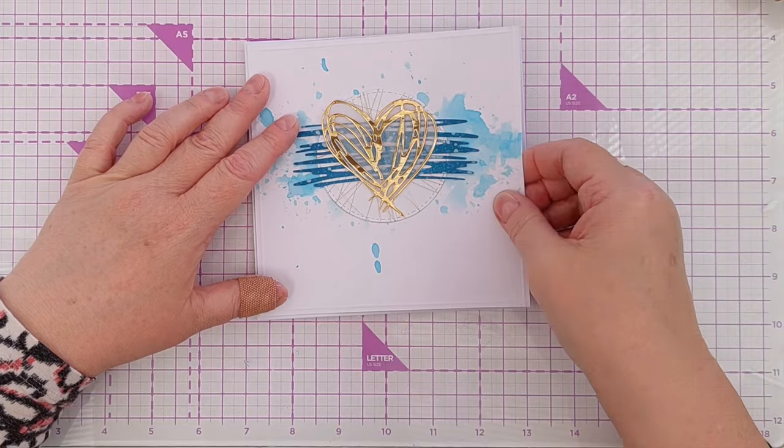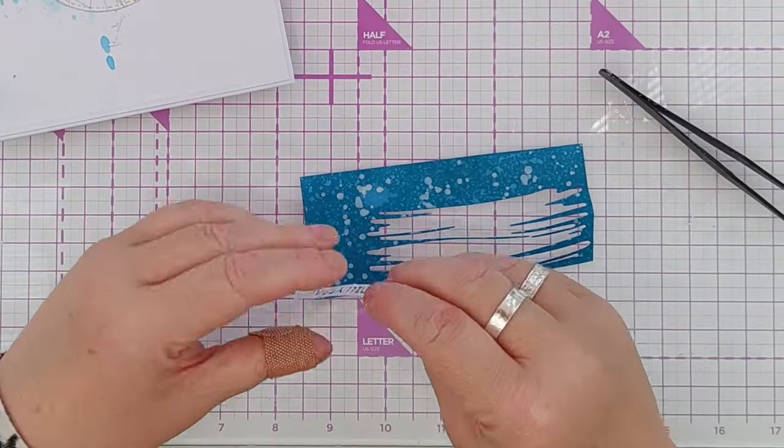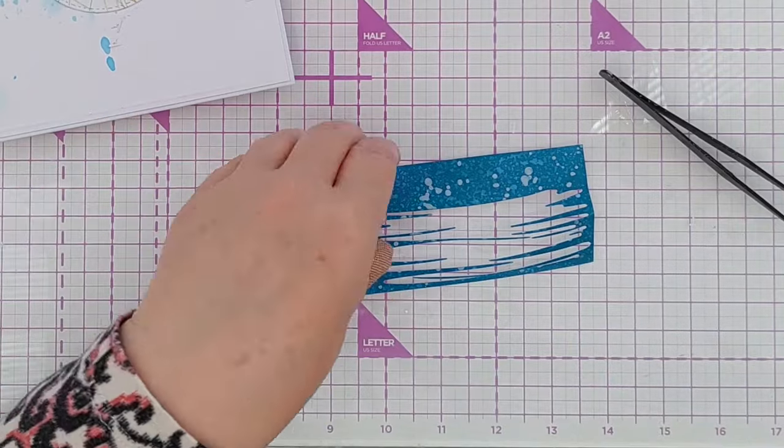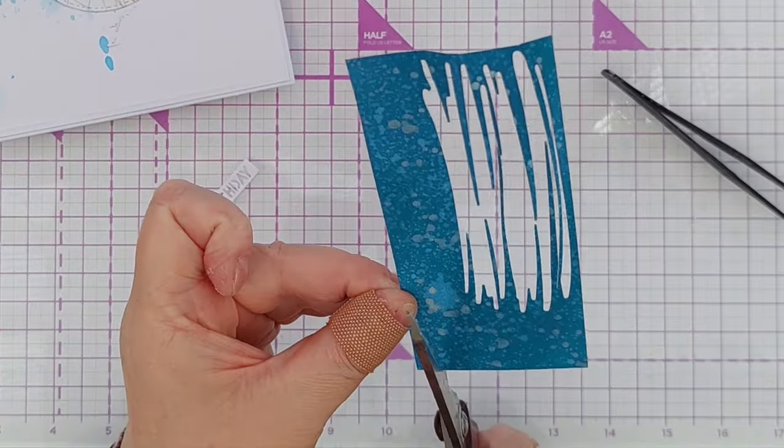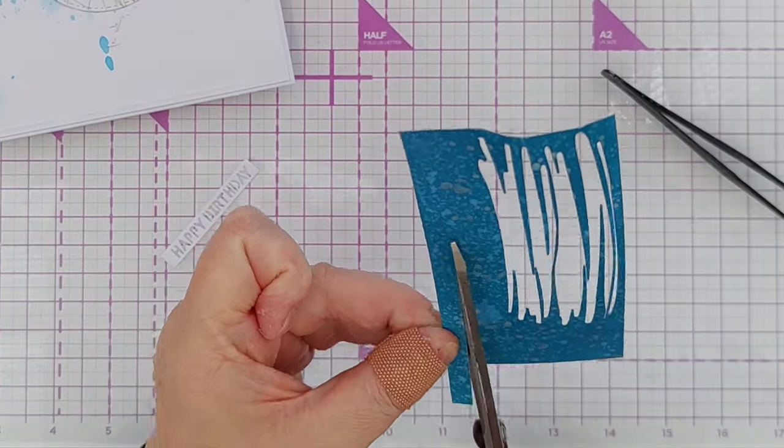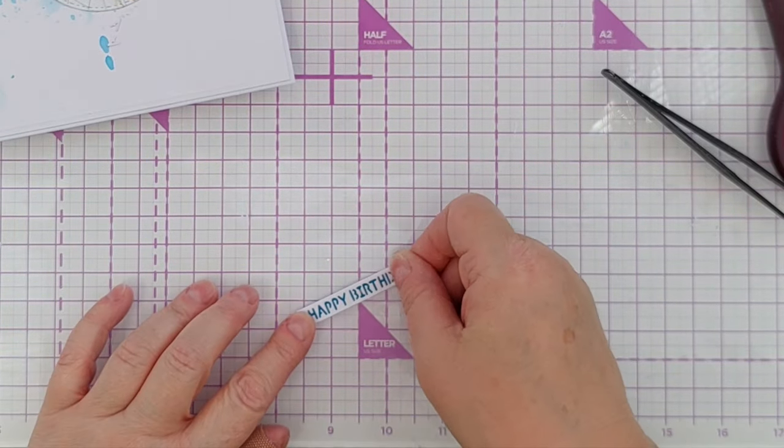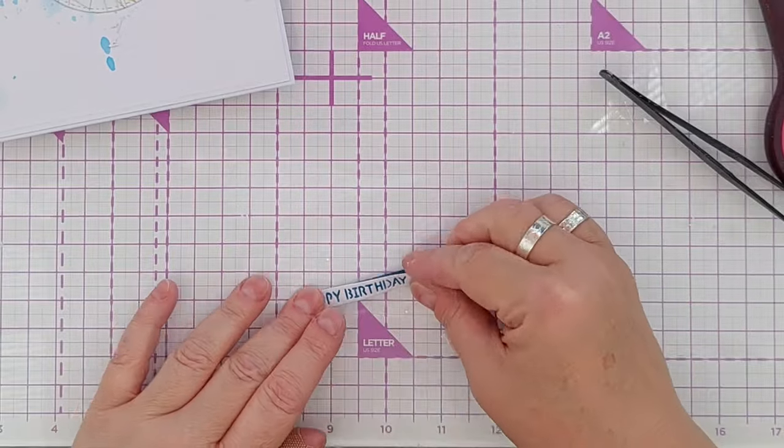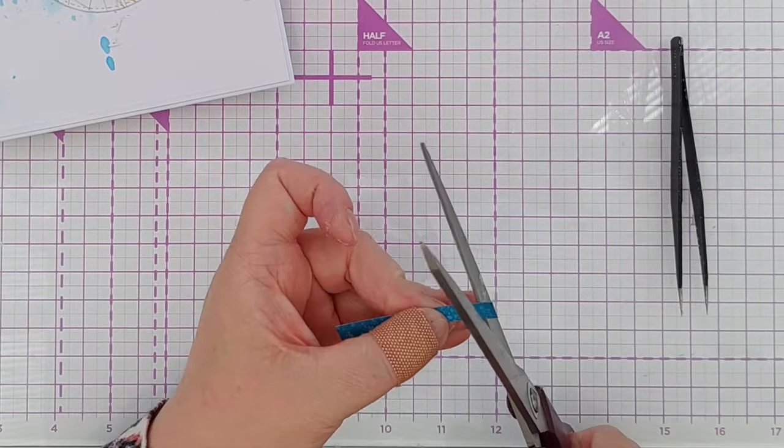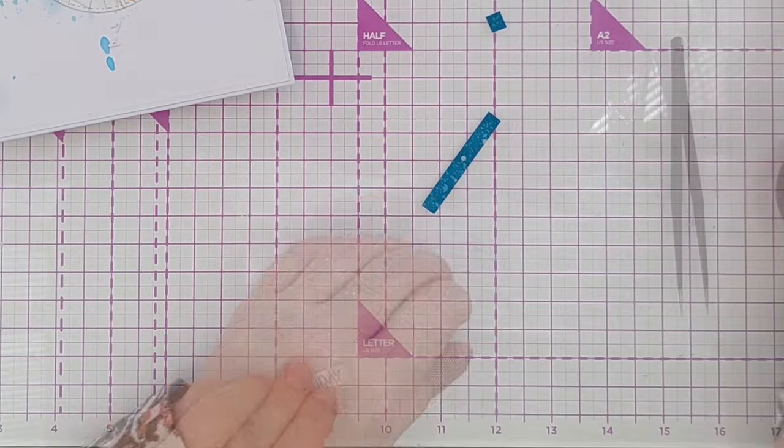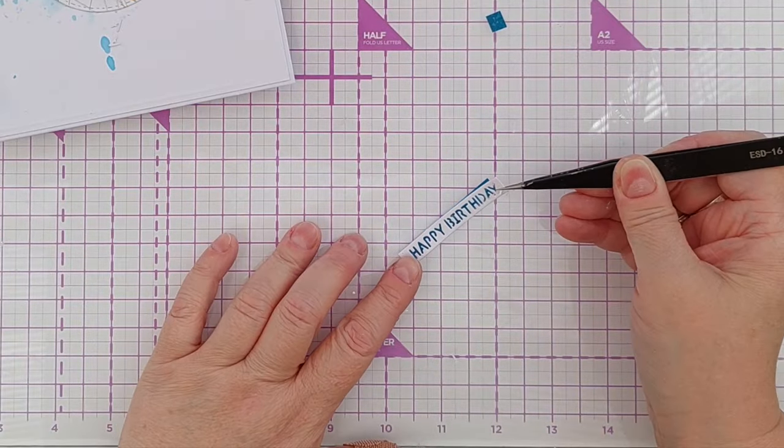For my sentiment, I chose one of my cut out strip sentiments. It just says happy birthday. To back it, I used a sliver of the dark blue that I'd used for that zigzaggy mixed media style die. I stuck those together with tacky glue, gave it a good press down with deli paper, and then added it on top of the heart.